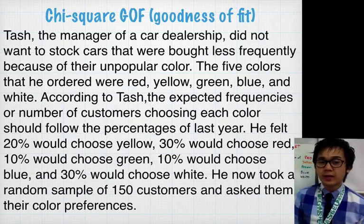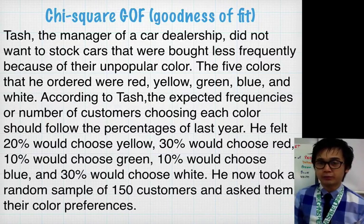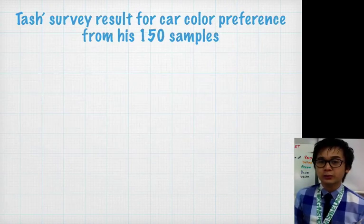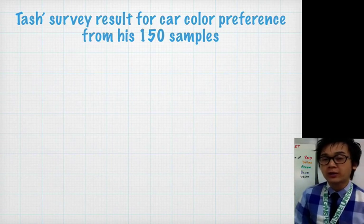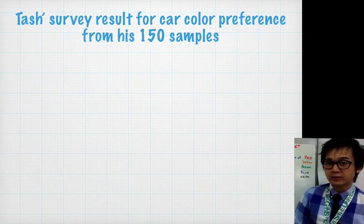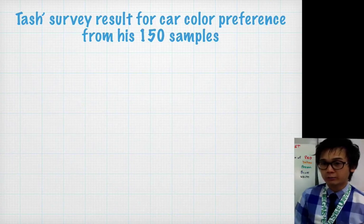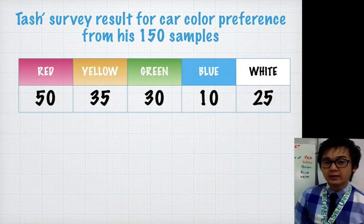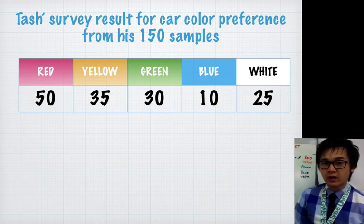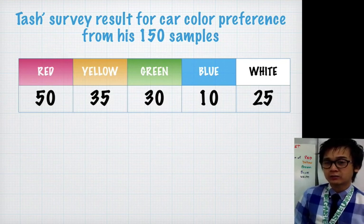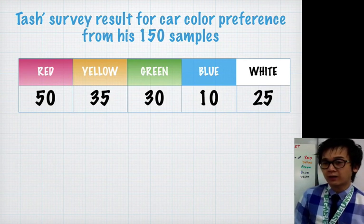He took a random sample of 150 customers and asked them their color preferences. Here are the distribution of Tash's survey from the 150 individuals that he asked about their car color preferences. For red, 50 of them chose red, 35 chose yellow, 30 for green, 10 like blue, and 25 for white.